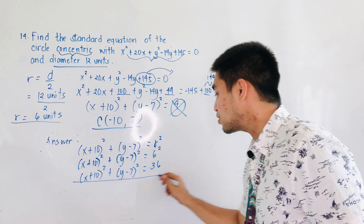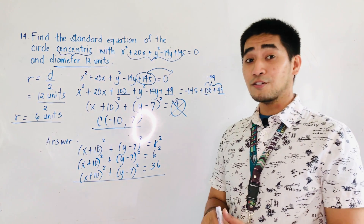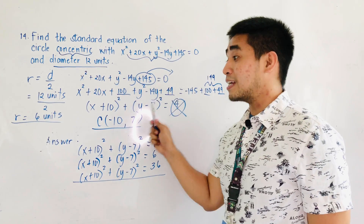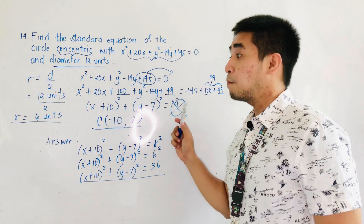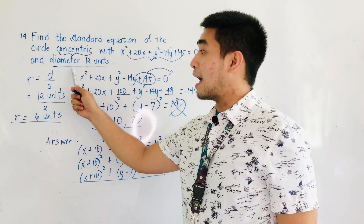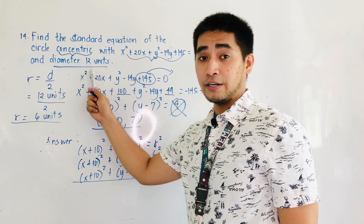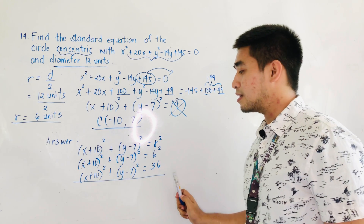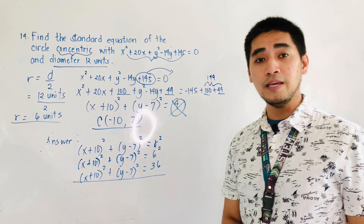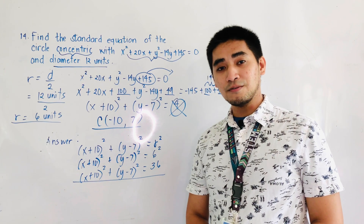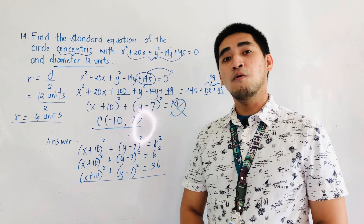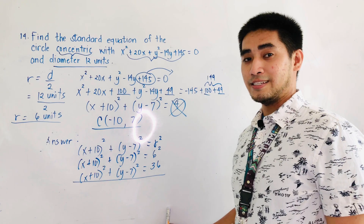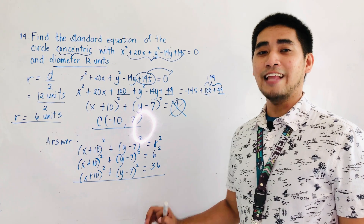This is now the equation of the circle which is concentric to the given equation, but they do not share the same radius. The radius is given as half of the diameter: 12 divided by 2 is 6, and 6 squared is 36. The final answer is x plus 10 quantity squared plus y minus 7 quantity squared is equal to 36.